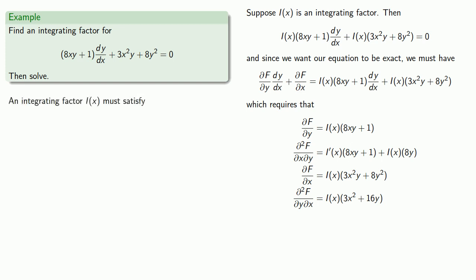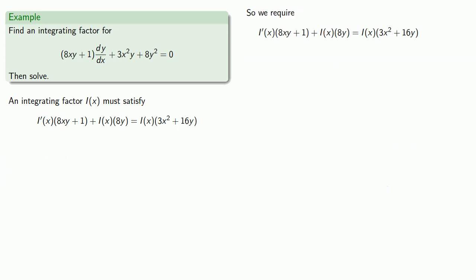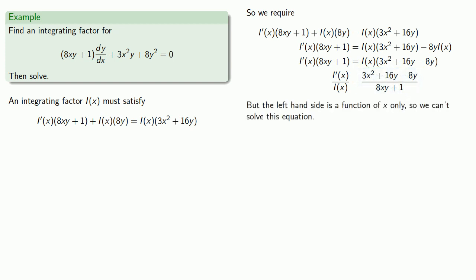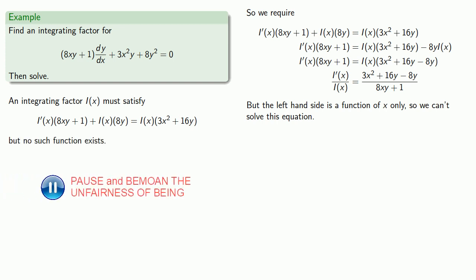Whatever our integrating factor is, it has to make the two mixed partials equal. So let's solve that equation — the unknown here is i of x. Getting all i of x terms together by factoring, we have i prime of x on the left-hand side and i of x on the right-hand side. Dividing both sides by i of x, we have a quotient of two functions of x, but it's expressed as a function of both x and y. Since the left-hand side is a function of x only, we can't solve this equation — no such function exists. So we can't find an integrating factor of the form i of x.